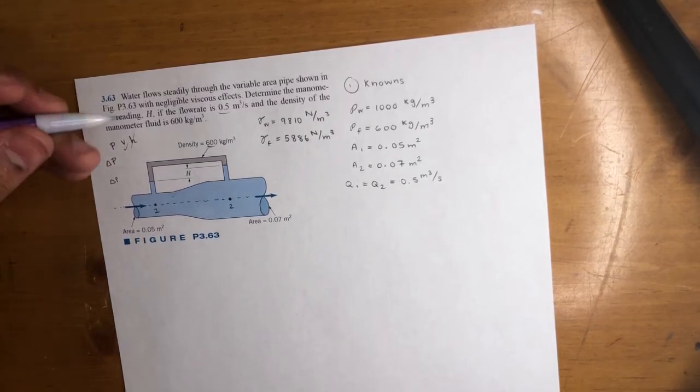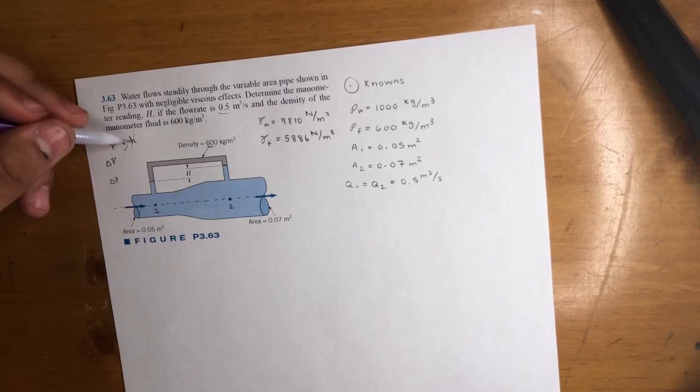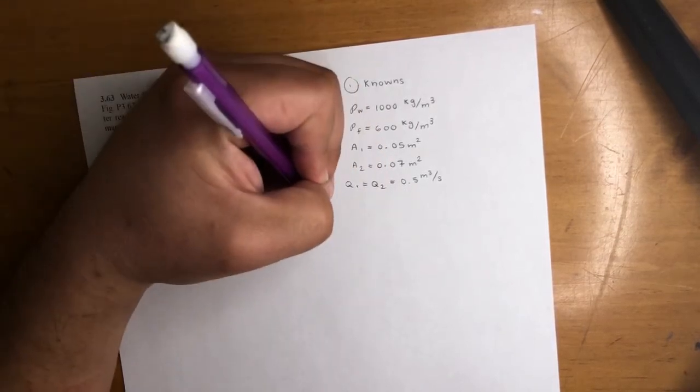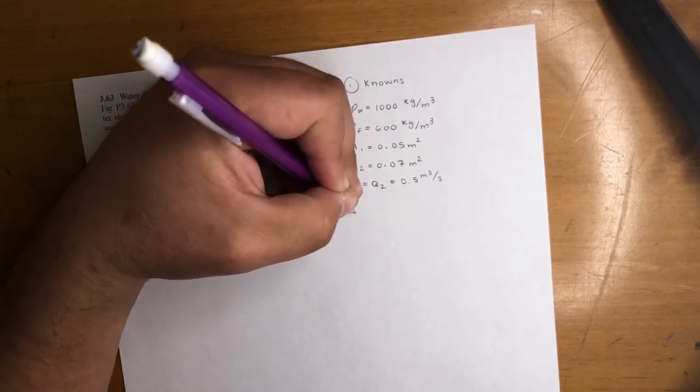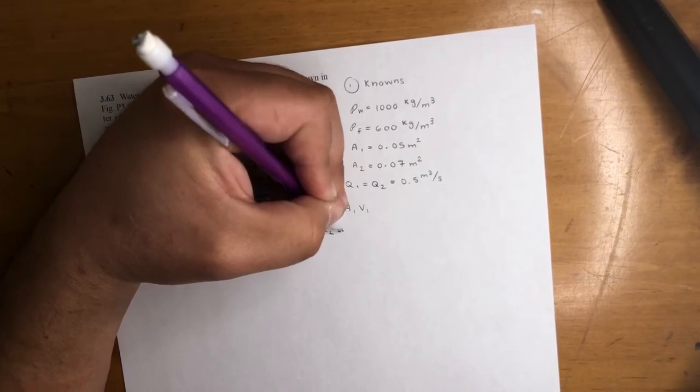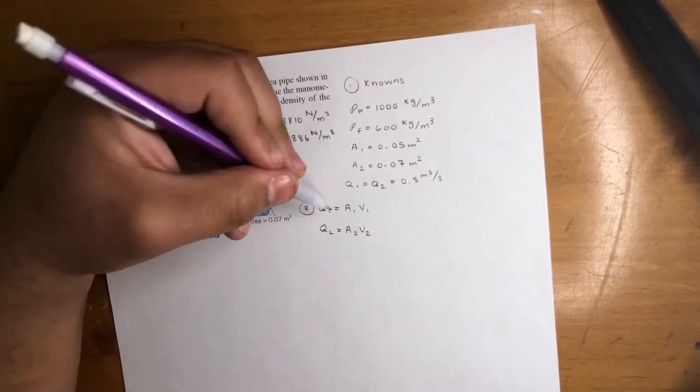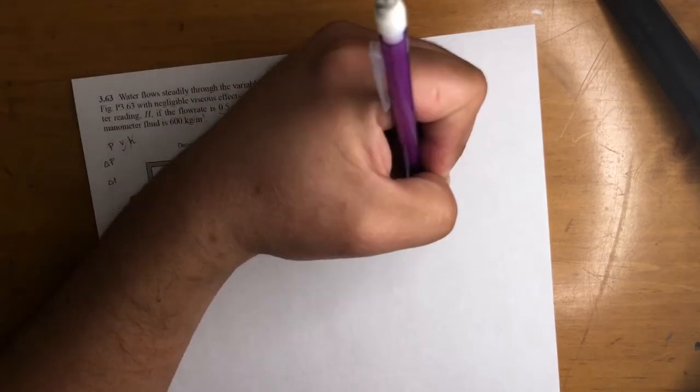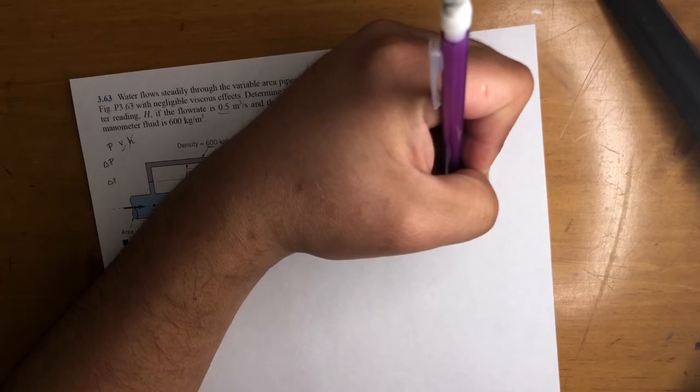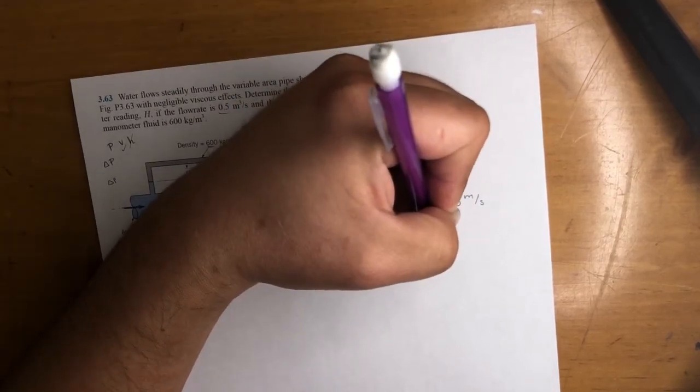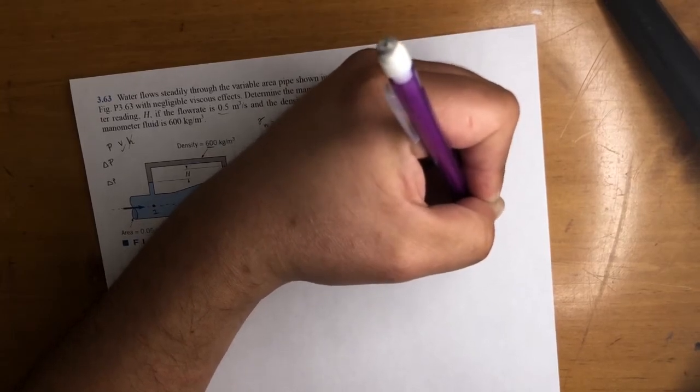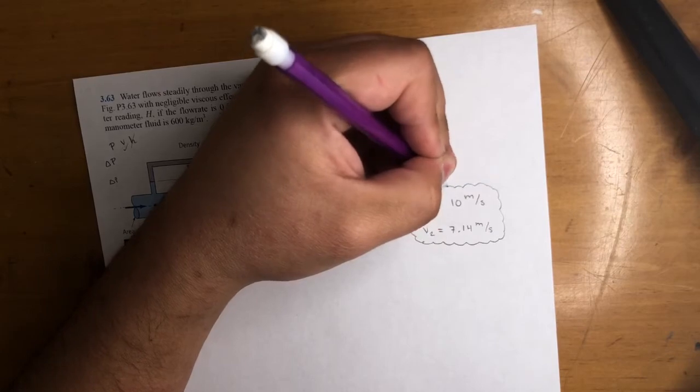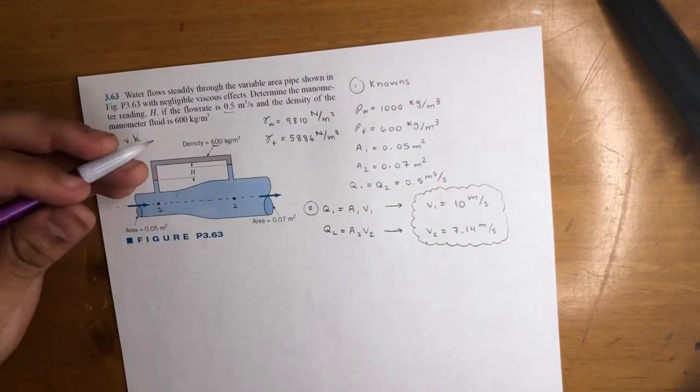So again, we got to do Bernoulli first. In order to do that, we need these three variables: pressure, velocity, and height. So let's go ahead and find the velocities. Velocity - we know Q1 is equal to A1 V1, and Q2 is equal to A2 V2. We have Q, that's 0.5 for both of them, A1 and A2. So we can find V1 and V2. So if you do that, V1 is equal to 10 meters per second. V2 is equal to 7.14 meters per second.